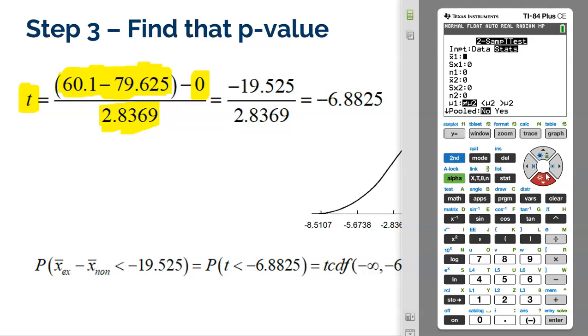One is going to be my exercise group. So this was 60.1 was their mean. The standard deviation was 7.0309. And the sample size for those who exercise was 10. Just filling all this in that was given to me in that table.